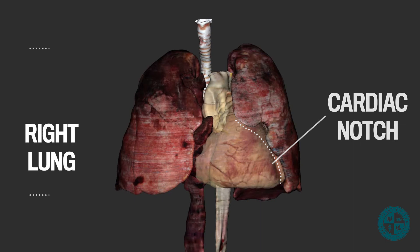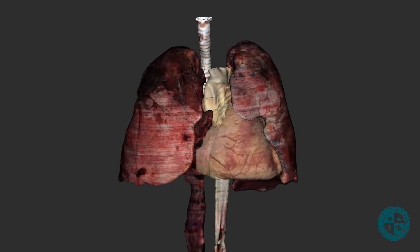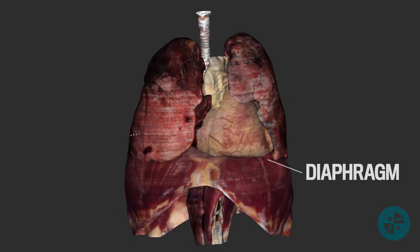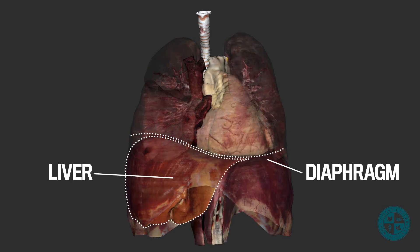You will also notice that the right lung is shorter than the left lung. This is because of the diaphragm. The right half of the diaphragm rises higher in the thoracic cavity than the left side because it accommodates the liver, which is in the right upper quadrant of the abdominal cavity.